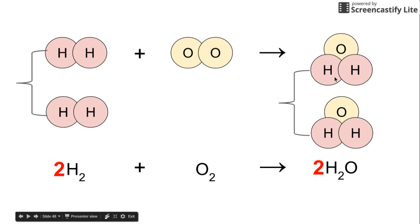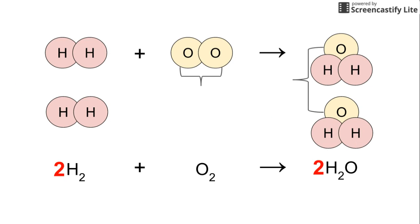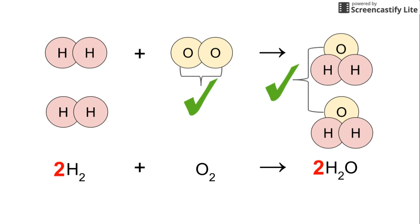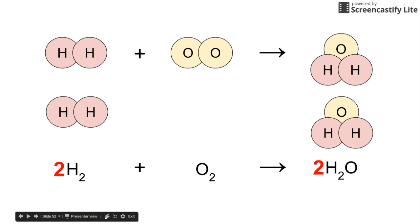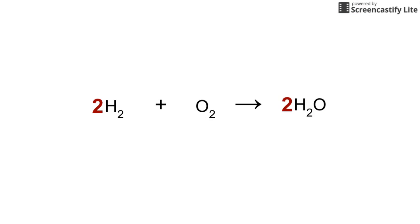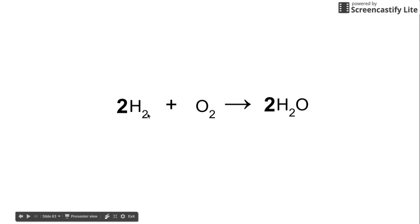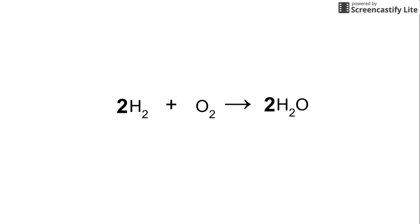Let's double-check that oxygen still balances — there are two oxygen atoms on the reactant side and two there on the product side. Fantastic, we are balanced! Cleaning this up and going back to the original equation, we now have 2H₂ + O₂ → 2H₂O. Using those molecular models to check back and forth, we can see this equation is fully balanced. You have now successfully balanced this equation.